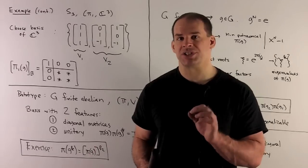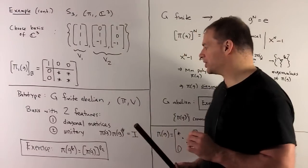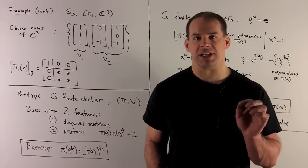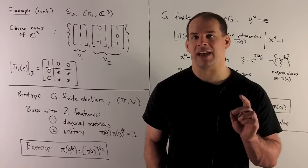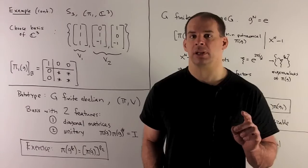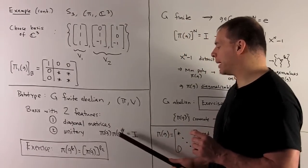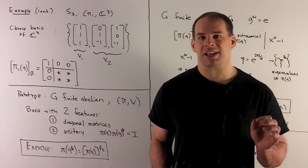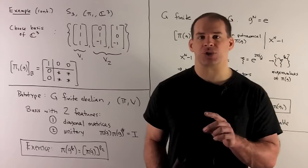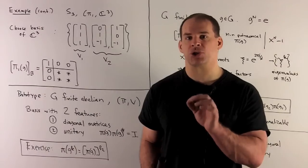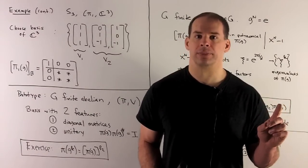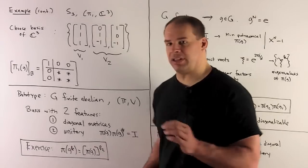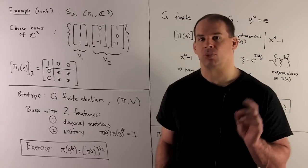Before we go to general finite G, let's first consider G finite abelian. We'll have our representation (π, V) and we're looking for a basis with two features: first, our basis is going to put our matrices in diagonal form simultaneously; and then those diagonal matrices are going to be unitary. Unitary means if we take the matrix π(g) and multiply by π(g)*, the conjugate transpose, out comes the identity matrix. The first step to showing this result — exercise: π(g^k) equals the matrix π(g) raised to the kth power.